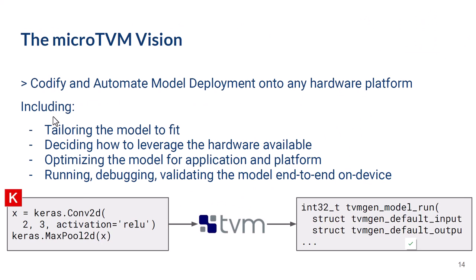The MicroTVM vision aims to help codify and automate the process of taking a model and deploying it onto any hardware target, while taking into account the type of hardware available, the constraints of the individual application, and the model itself being deployed. This really means building languages that describe these problems and finding a way to link them together into a tool with well-understood transitions between those languages.